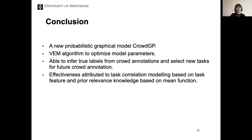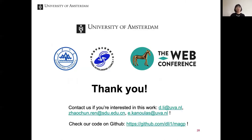To conclude, we propose a new probabilistic graphical model CrowdGP and use variational EM to optimize the model. The model is able to predict labels for existing crowdsourcing tasks and select new tasks for future crowd annotation. Its effectiveness is mainly attributed to task correlation modeling and prior relevance knowledge. Thank you very much for your attention.